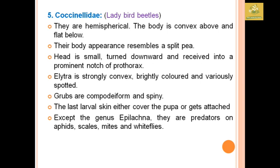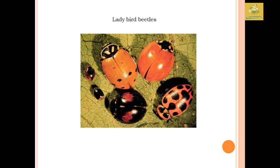The Coccinellidae family comprises ladybird beetles. They are hemispherical in shape, convex above and flat below, resembling a split pea. The grubs are campodeiform and spiny. The elytra are strongly convex and brightly colored, variously spotted. Except for the genus Epilachna, they are predators on aphids, scales, mites, and whiteflies.